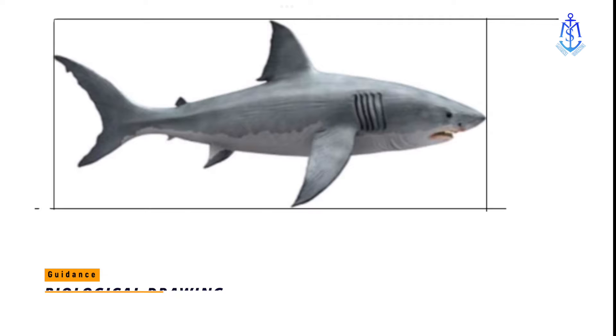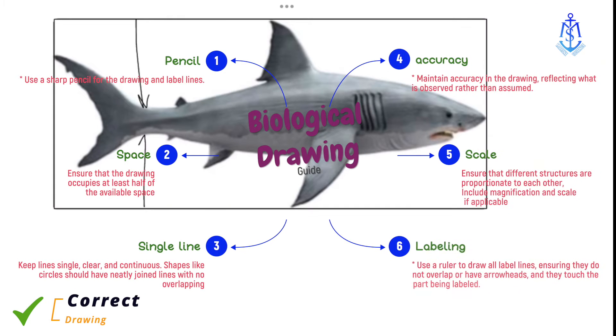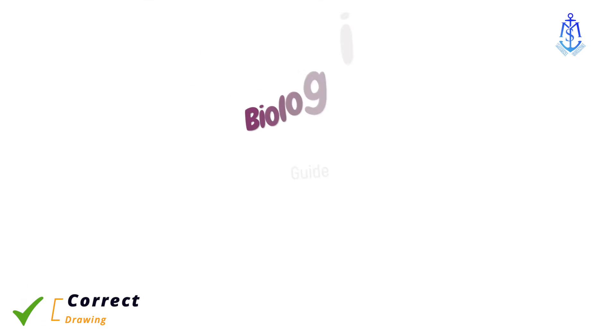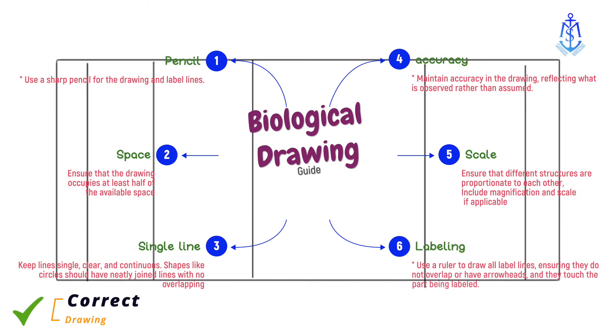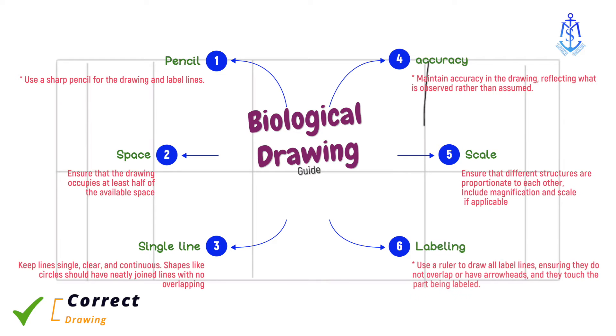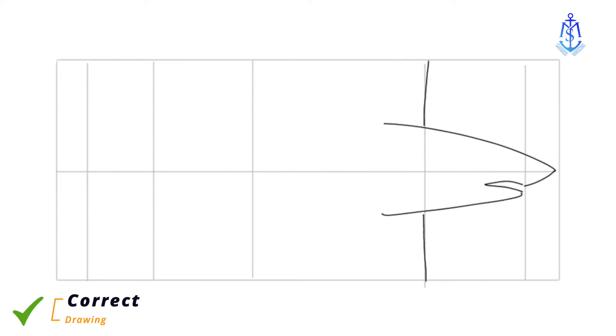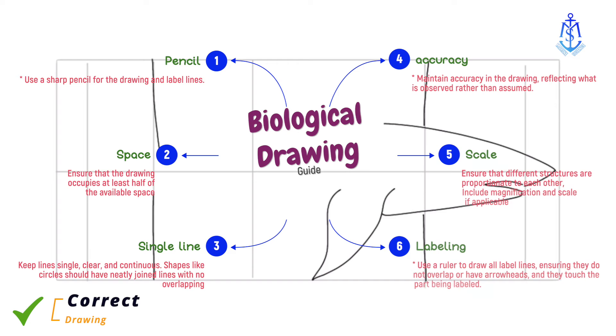Guidance for biological drawing: Use a sharp pencil for the drawing and label lines. Ensure that the drawing occupies at least half of the available space. Keep lines single, clear and continuous. Shapes like circles should have neatly joined lines with no overlapping.